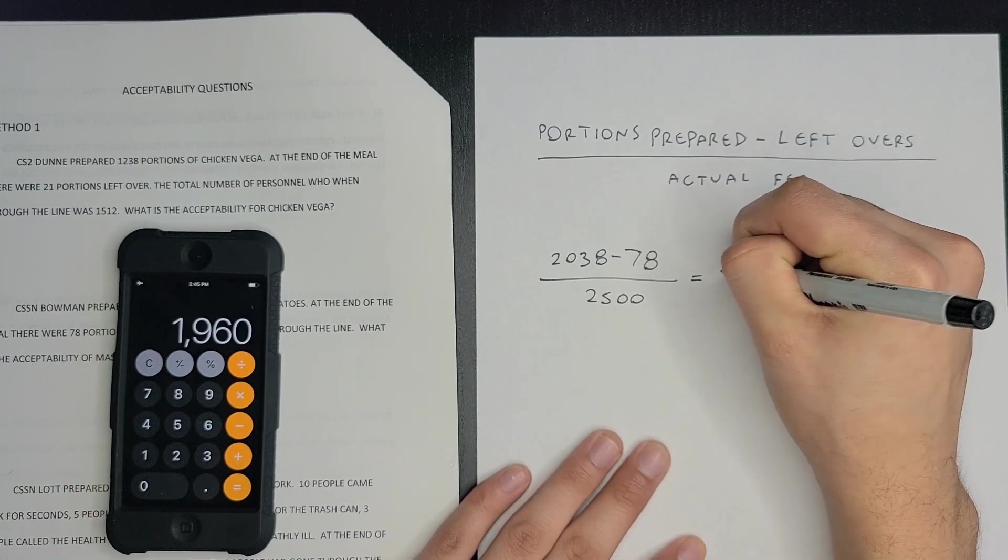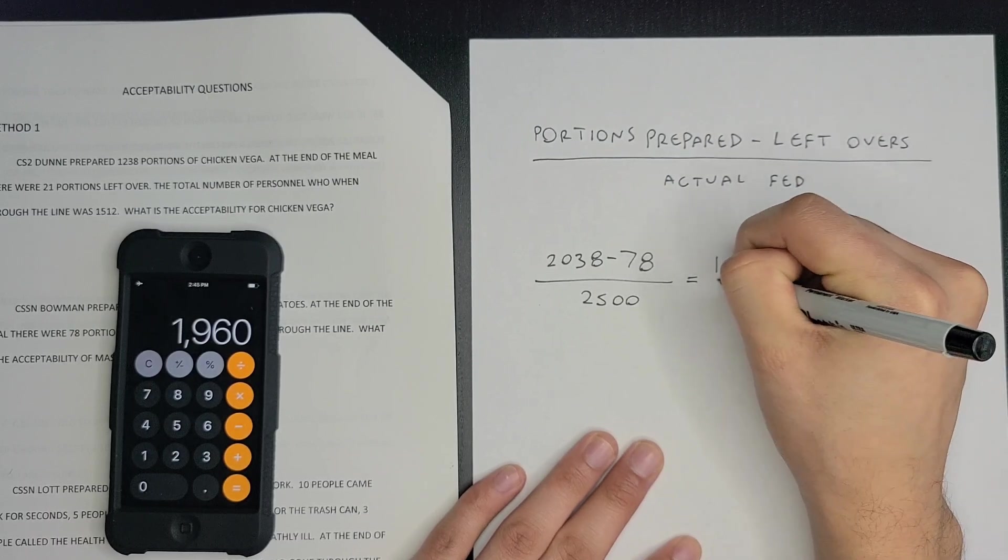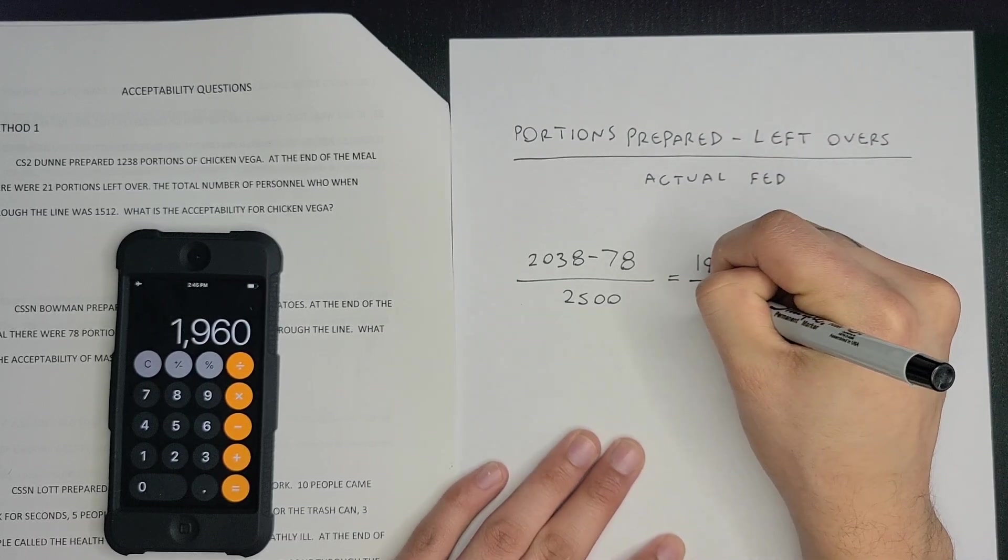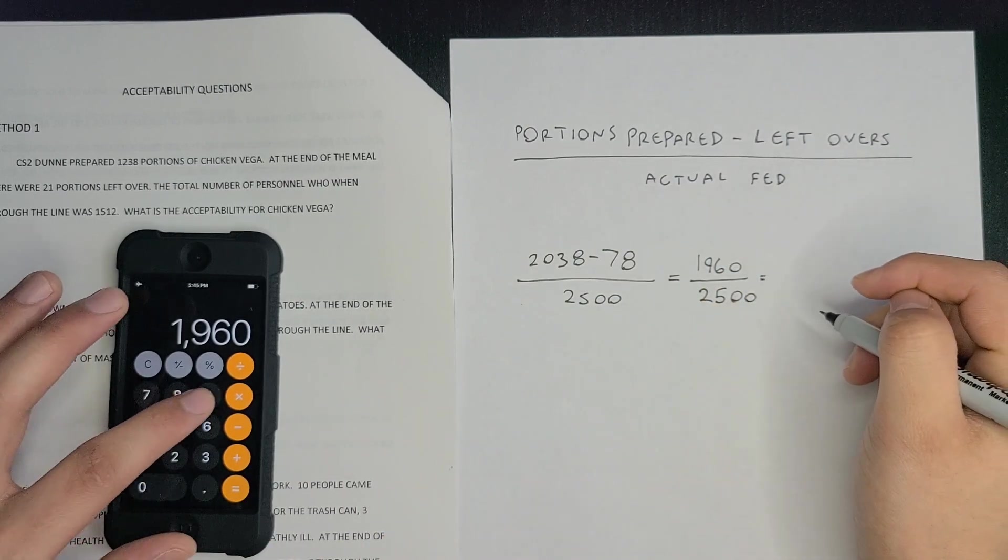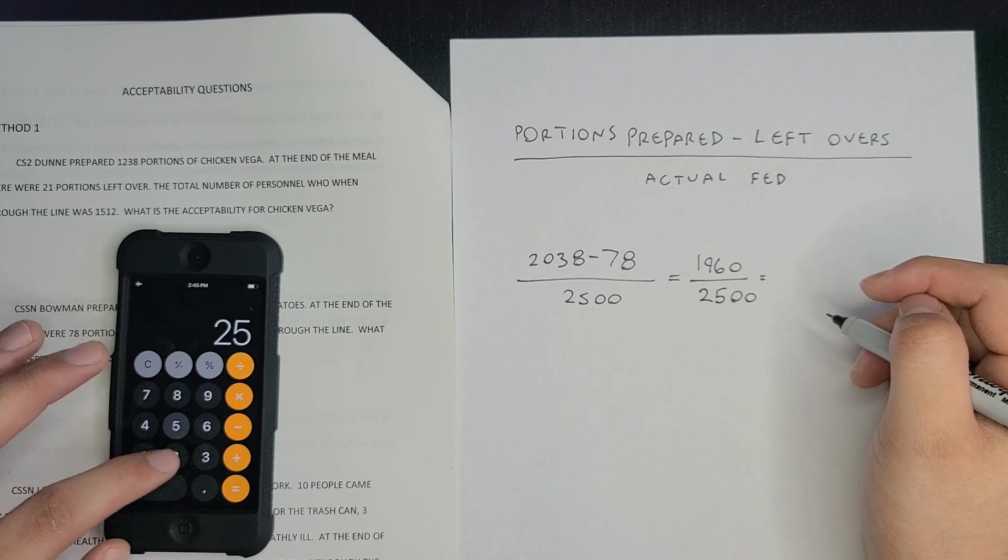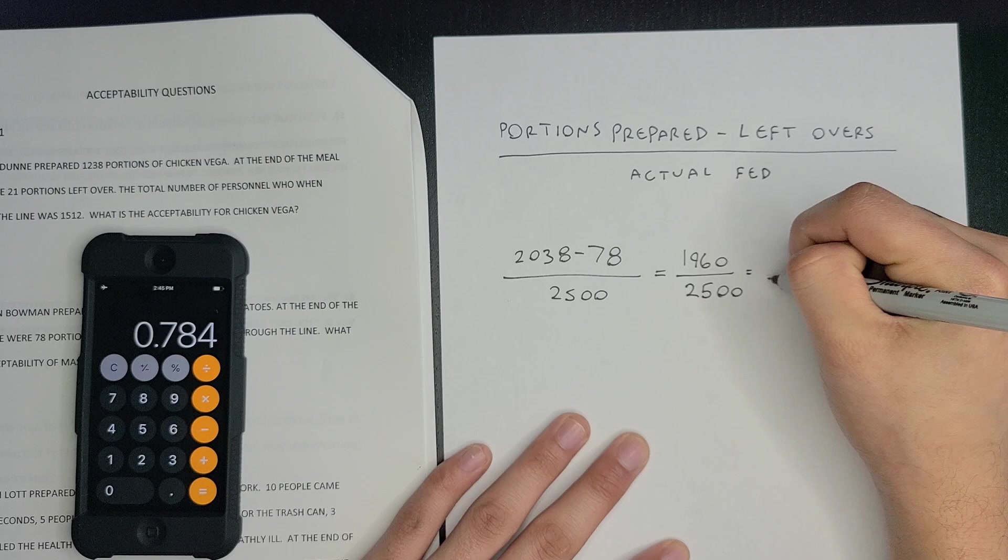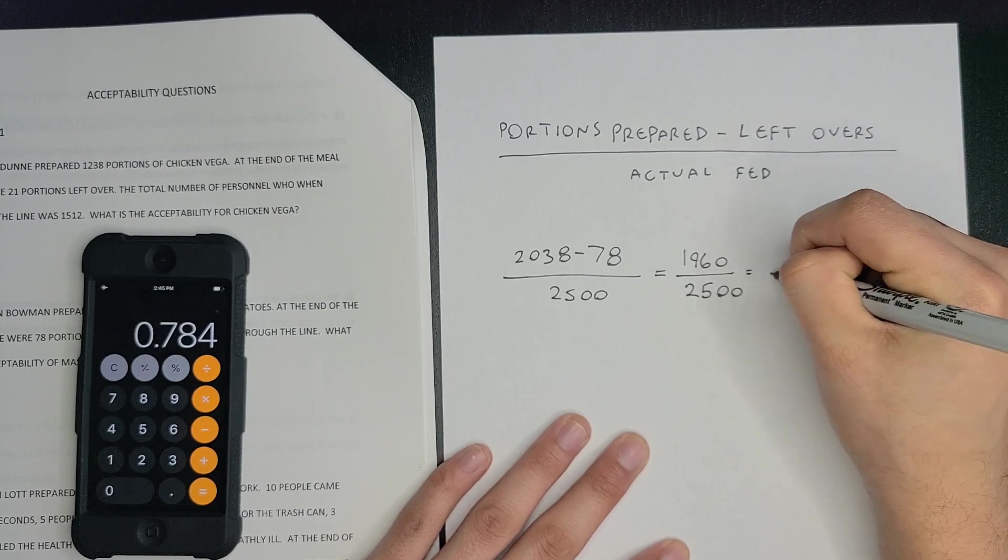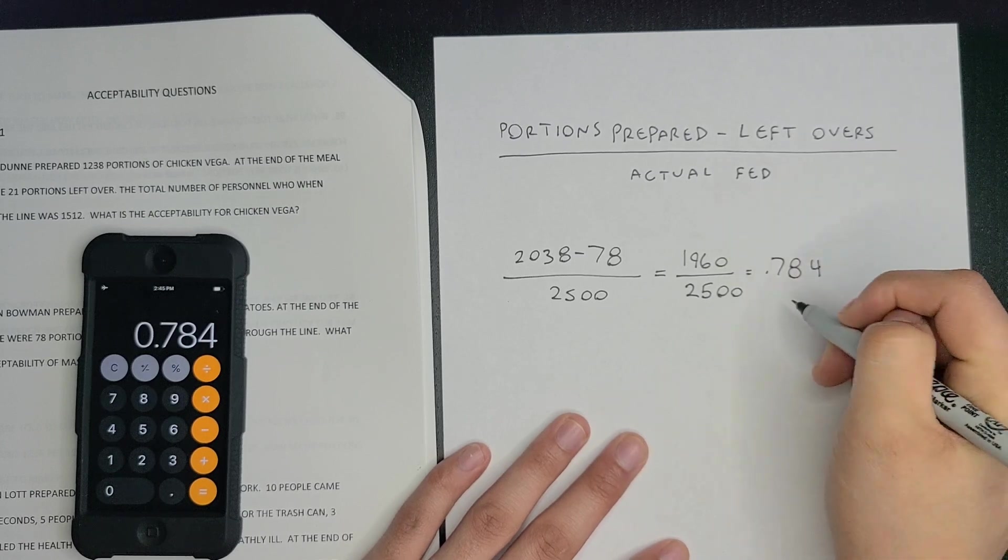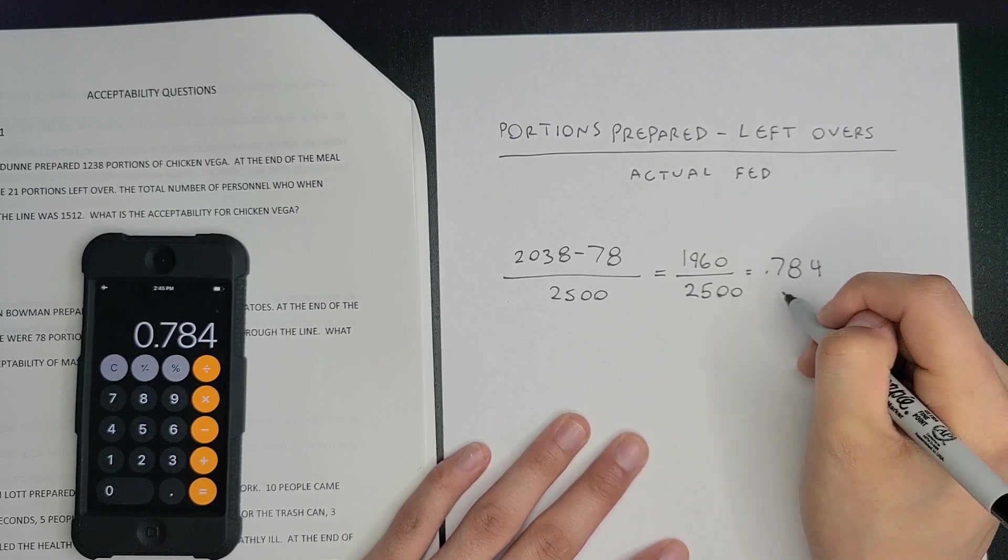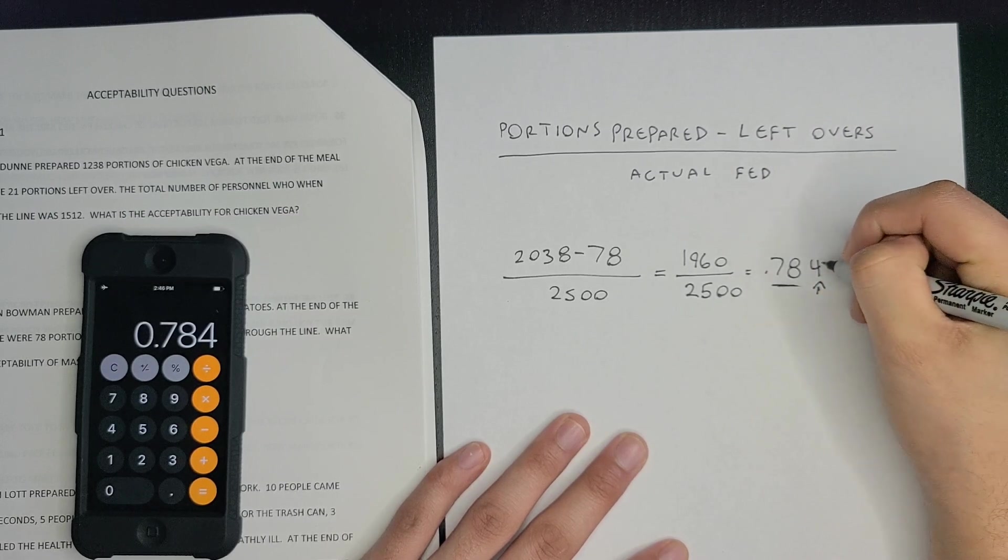equals 1960. You're going to divide by 2500, which is 0.784. We only need two decimal places to the hundredths place. If your third number is four